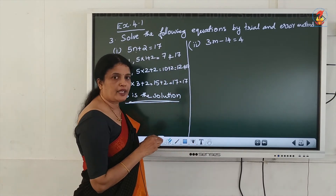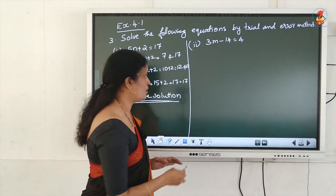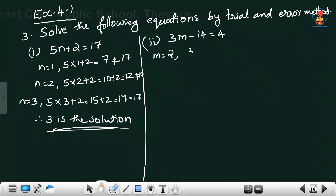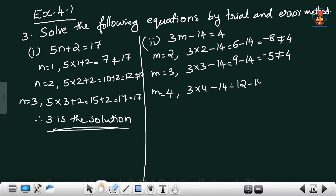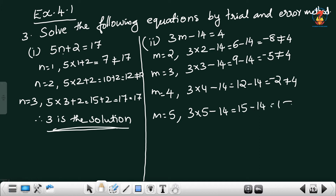The second equation is 3m − 14 = 4. Using trial and error, substitute values for m. For m = 2: 3×2 − 14 = −8, not equal to 4. For m = 3: 3×3 − 14 = −5, not equal to 4. For m = 5: 3×5 − 14 = 1, not equal to 4.